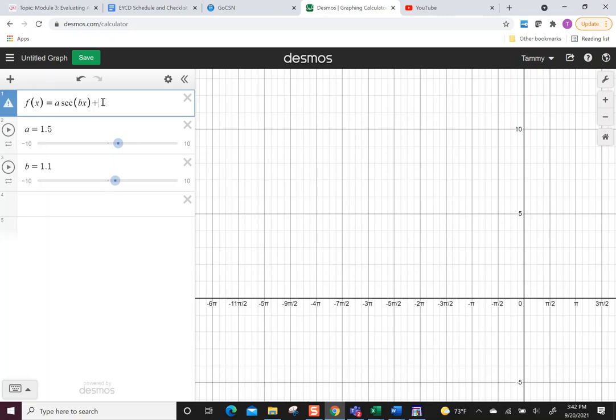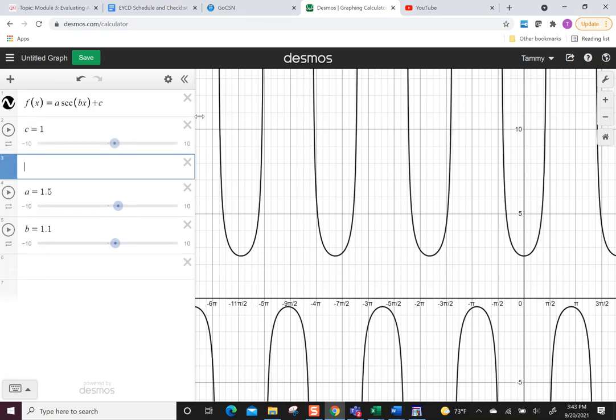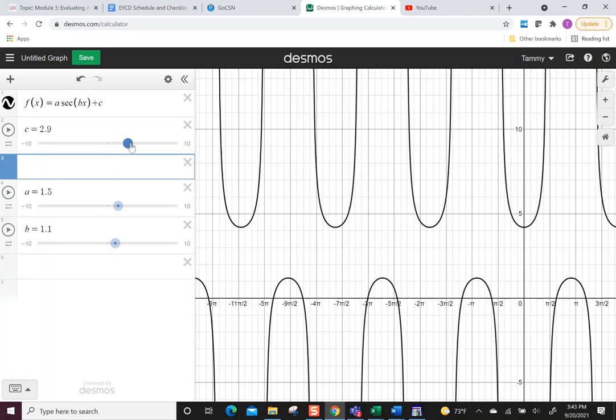And then if you wanted to put a c, so it's 2 plus c, then I can also see a vertical transformation, and that's up here.